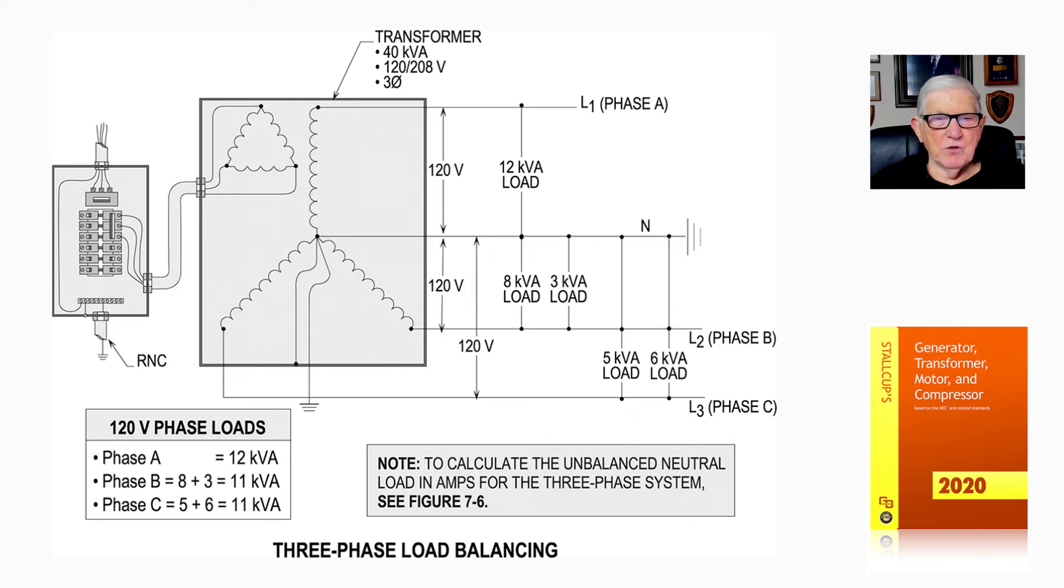So B and C are balanced, but A is not. Now to figure this unbalanced condition, you would need to look at Figure 7-6, and it would show you how to calculate the unbalanced load based upon phases A, B, and C, as we see in the formula that's listed and the calculation performed in Figure 7-6.